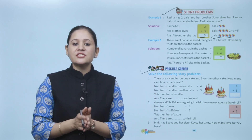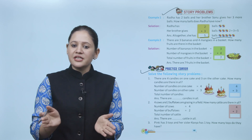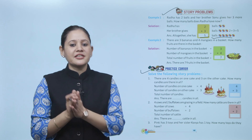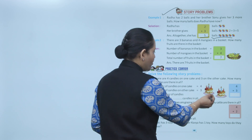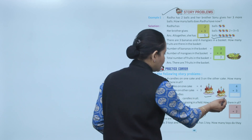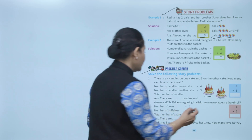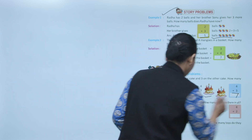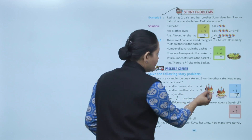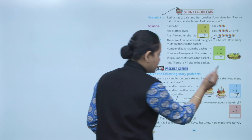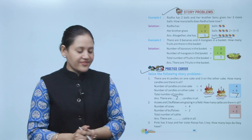Practice corner — solve the following story problems. There are four candles on one cake and three on the other cake. How many candles are there in all? Four plus three equals seven. There are seven candles in all: one, two, three, four, five, six, seven.